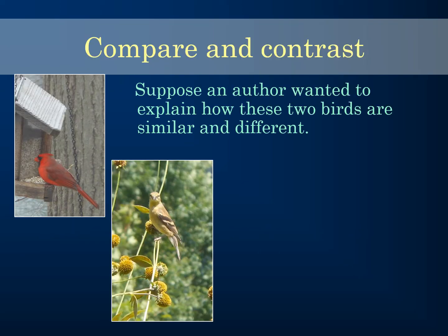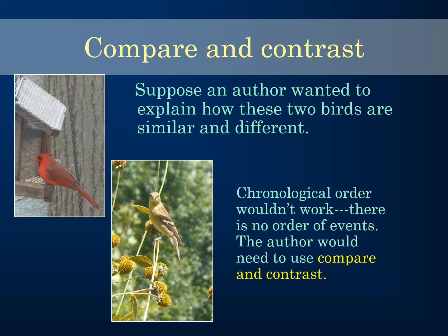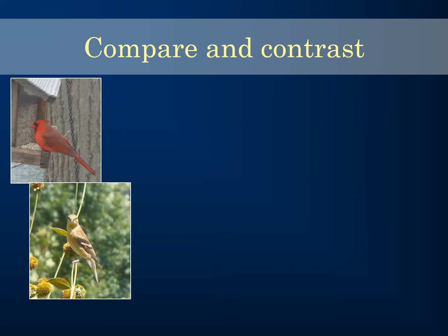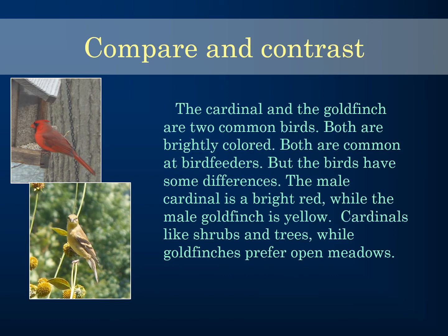Suppose an author wanted to explain how two birds are similar and different — chronological order won't work, so we use compare and contrast. Here's an example: 'The cardinal and the goldfinch are two common birds. Both are brightly colored. Both are common at bird feeders. But the birds have some differences. The male cardinal is bright red, while the male goldfinch is yellow. Cardinals like shrubs and trees, while goldfinches prefer open meadows.'